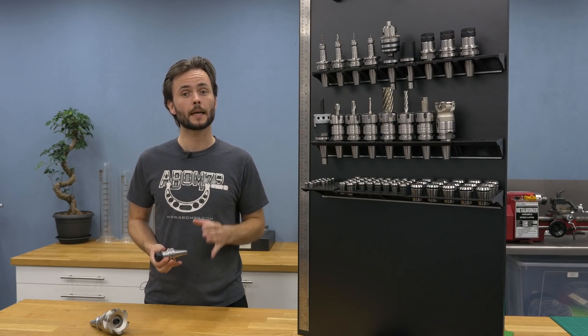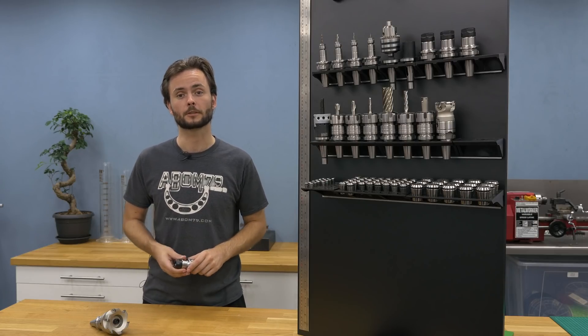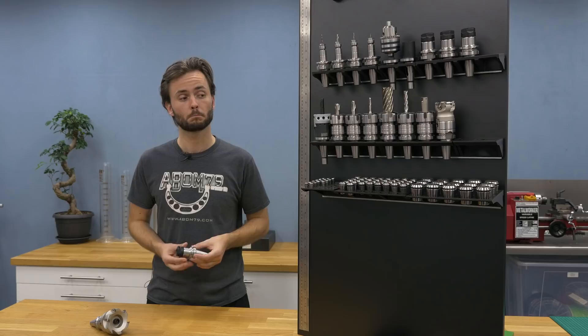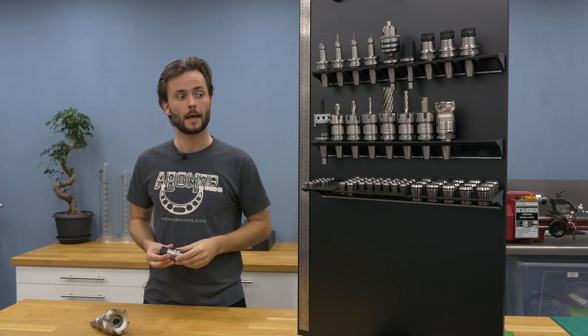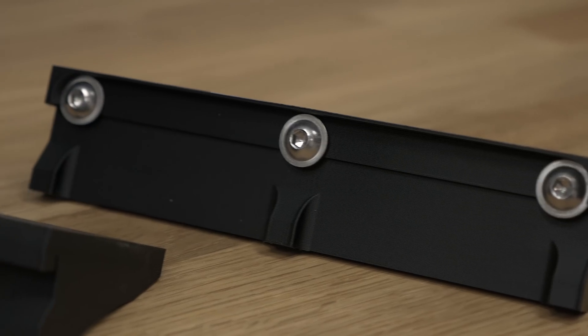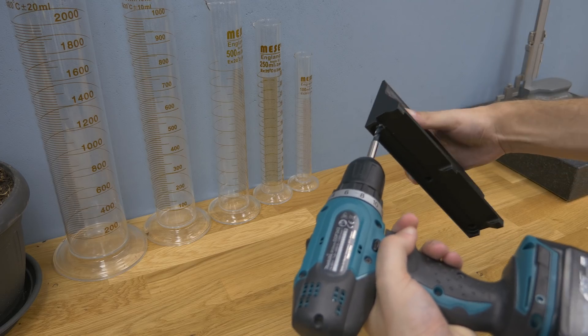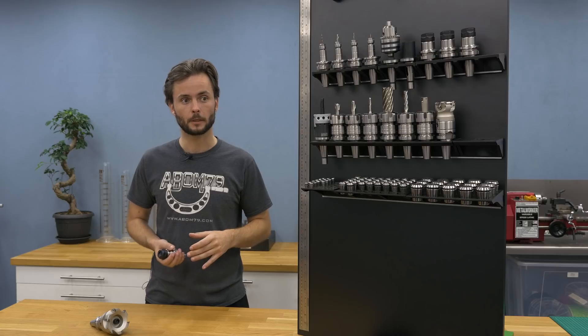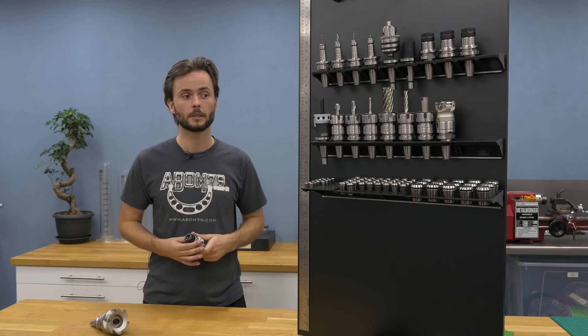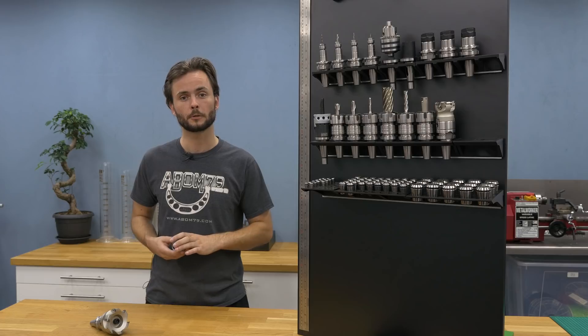So these models can be printed in layer heights ranging from 0.1 to 0.3 millimeter. And one thing to note, that if you're going to pick 0.3, as I did with all these holders, and you also made these heavy duty versions, you really need to follow the threads that you printed with a M8 tap. Because the resolution of the print around these threads is not high enough to just screw in the bolts themselves.